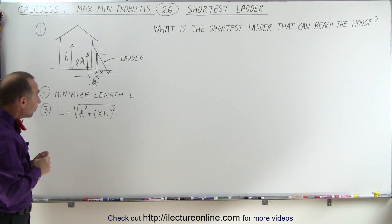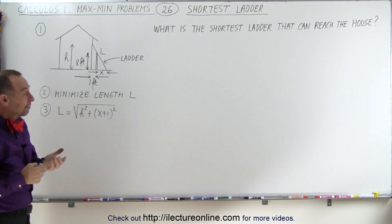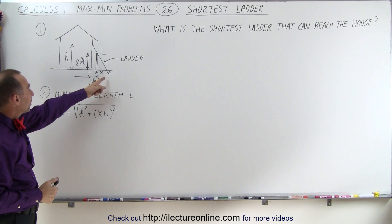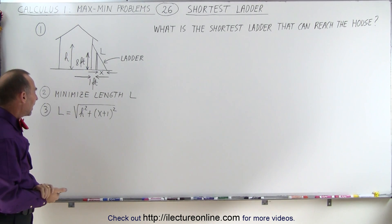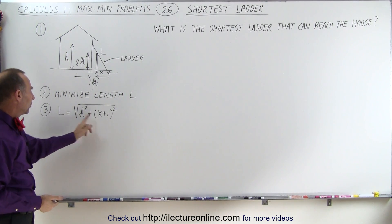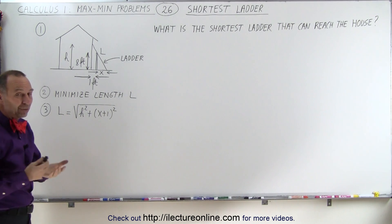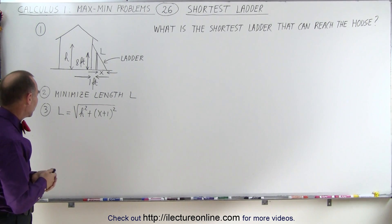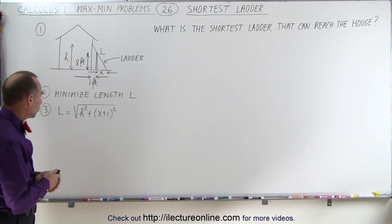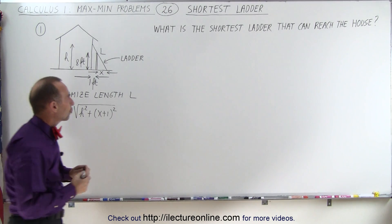Ultimately we're trying to find x. Once we find x, we can find h, and we can find the length of the ladder. But we have two variables here — h and x — which means we need to eliminate one of the two variables. For that, we need a constraint.